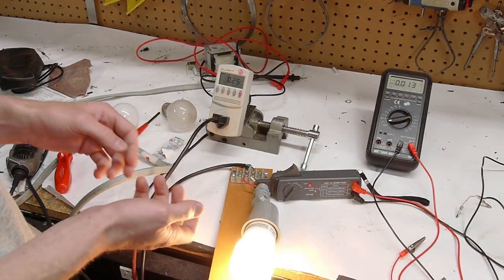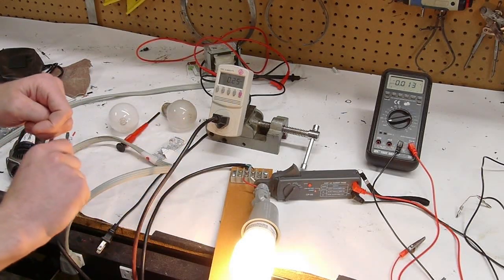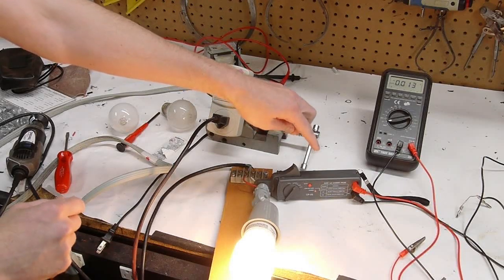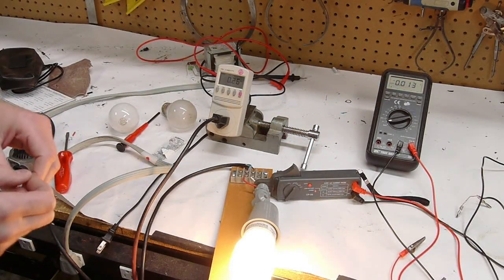So let's hook the probe up to the scope, which is really what this thing is useful for. If you just wanted to know what the value was, you could use one of those EXTEC clamp on meters that just has a readout right on the meter. The whole point of getting a current probe is to actually analyze the current waveform on an oscilloscope. So let's hook it up.